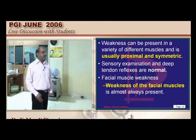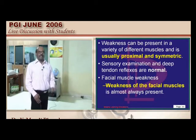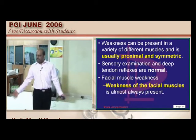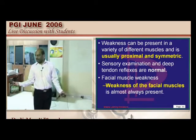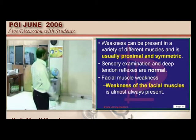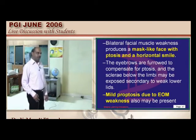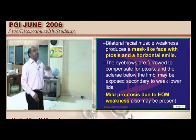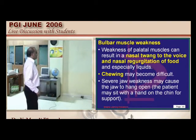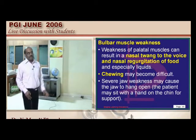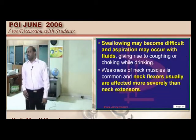In myasthenia gravis, weakness is typically proximal and symmetric. Deep tendon reflexes and sensory examination should be normal because the pathology is at the neuromuscular junction. Facial muscle weakness is almost always present, mild ptosis from extraocular weakness, and bulbar muscles including swallowing can be affected. Neck flexors are more affected than neck extensors.